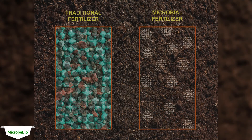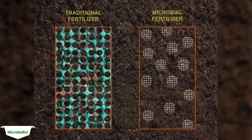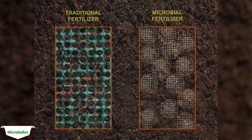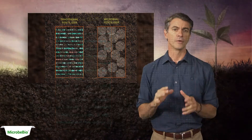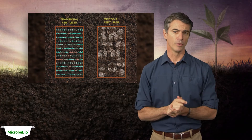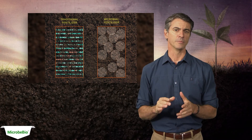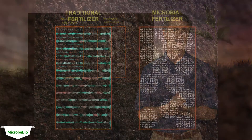After 2 weeks, the nutritional amounts of traditional fertilizers are reduced over time. On the other hand, microbial fertilizer keeps activating and spreading. After a month, traditional fertilizers keep reducing in amount while microbial fertilizer keeps expanding and interacting with other organic components.